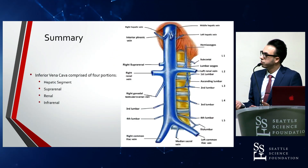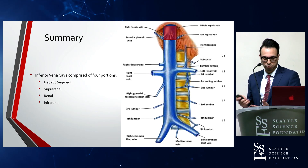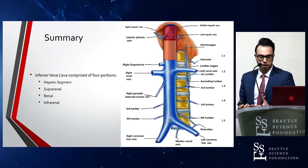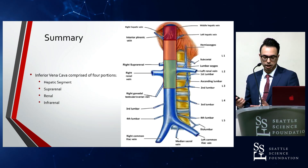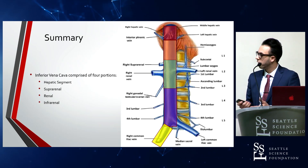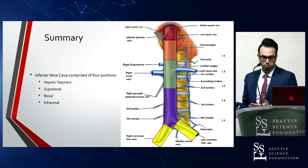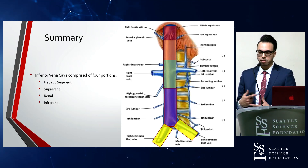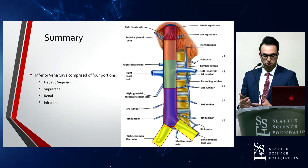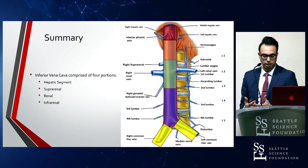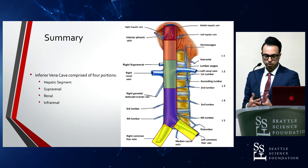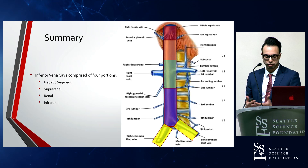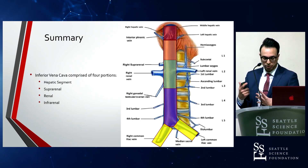In summary, the inferior vena cava is comprised of four portions: the hepatic segment from the right vitelline vein, the suprarenal portion from the subcardinal vein, the renal portion from the right sub-supercardinal anastomosis, and the infrarenal portion from the right supercardinal vein. The two iliac veins arise from the posterior cardinal veins. The complex embryology of the IVC — with its many anastomoses and constant regression and progression — gives rise to a wide variety of possible variations. This is especially important for physicians and surgeons to understand during imaging and surgery to avoid serious complications and injury to vital vessels.